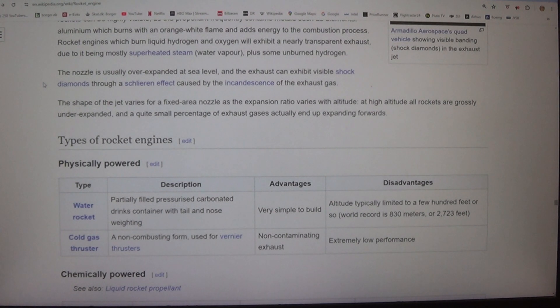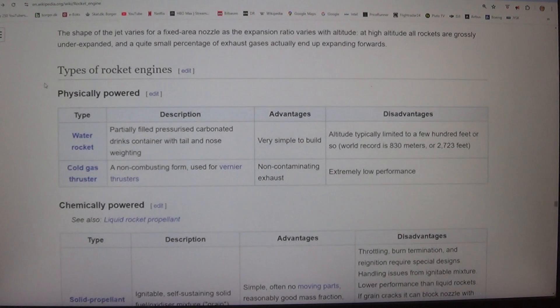Types of rocket engines. Physically powered. Water rocket - partially filled pressurized carbonated drinks container with tail and nose weighting. Very simple to build. Altitude typically limited to a few hundred feet or so. World record is 830 meters (2,723 feet).